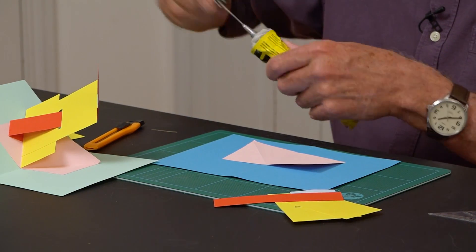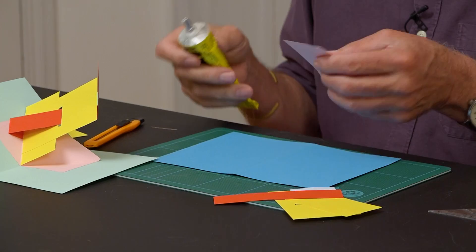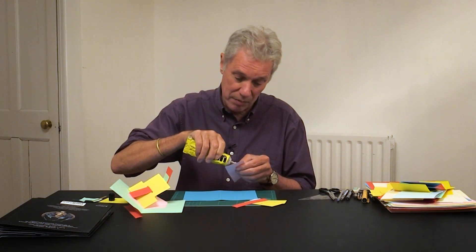So I'll just put the glue on there. And as it's flat, when the pop-up is flat, you can glue both sides at the same time.